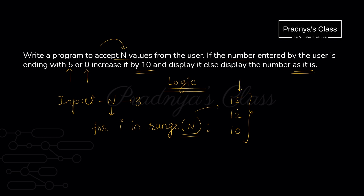We are interested in the last digit of the number. To separate out the digits, we take the modulus of the number by 10 — this gives us the remainder, which is the last digit. Then using if we check whether it is 5 or 0. If it is 5 or 0, we add 10 to the number and print it. Otherwise we print the number as it is.